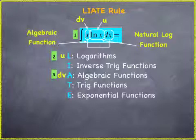So let's just try it. In our example, we have x, which is our algebraic function. Algebraic begins with A, so we're going to use the letter A in our LIATE rule, as you can see in item three.